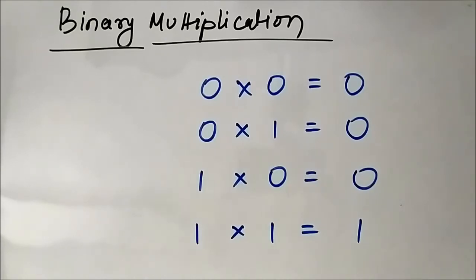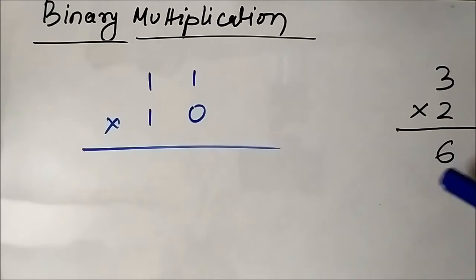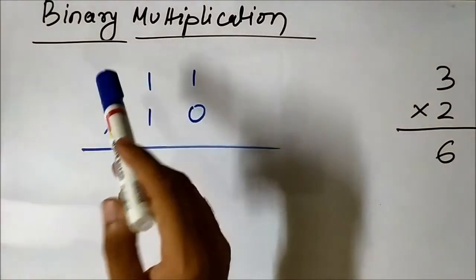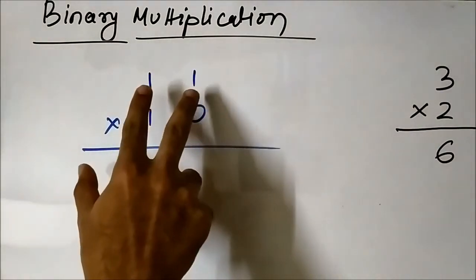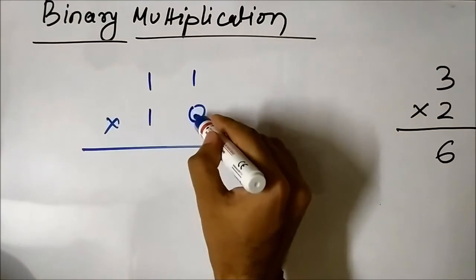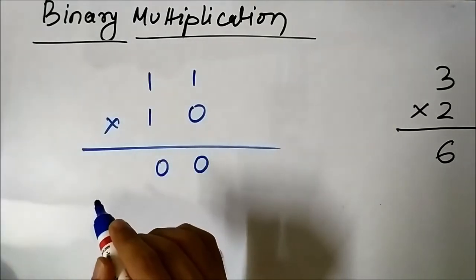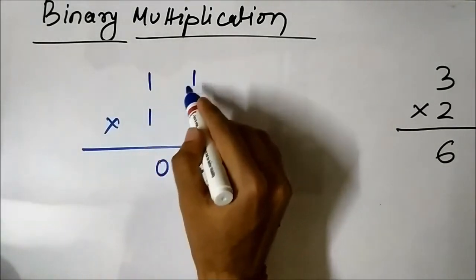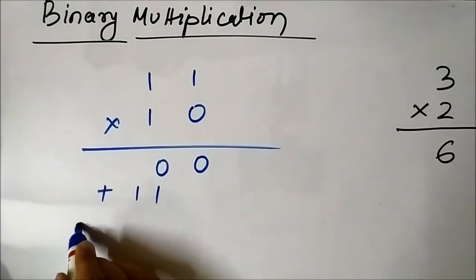Let us perform a simple multiplication first with small numbers: 3×2 in decimal gives 6. We are going to perform the same operation in binary. 1 1 1 represents 3, and 1 0 represents 2. So: 0×111 gives 0 0 0, and then 1×111 gives 1 1 1, shifted one position.